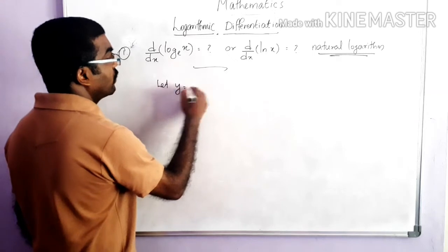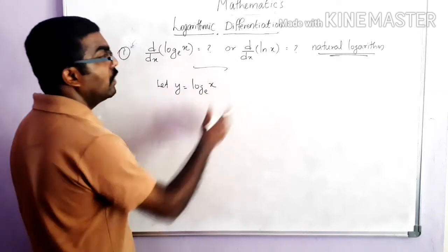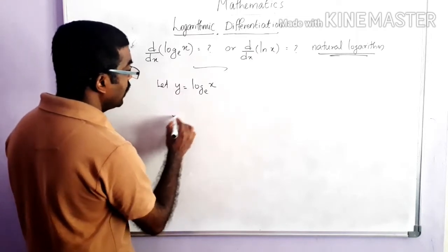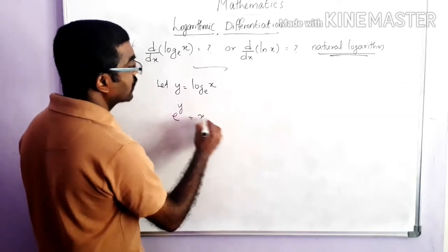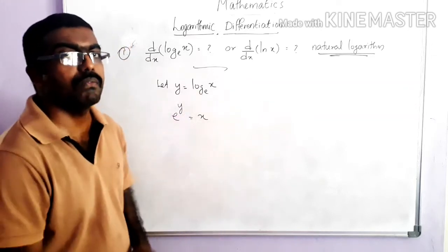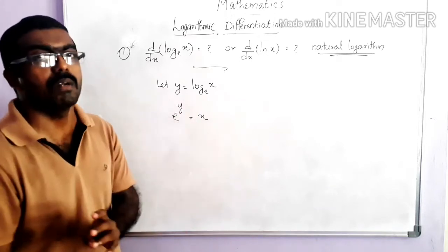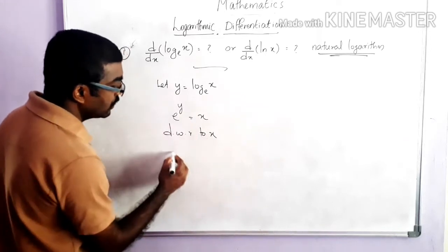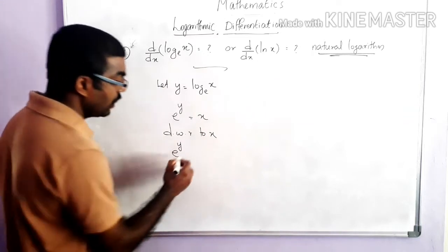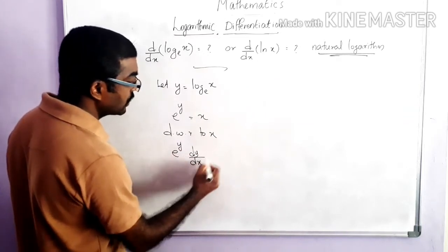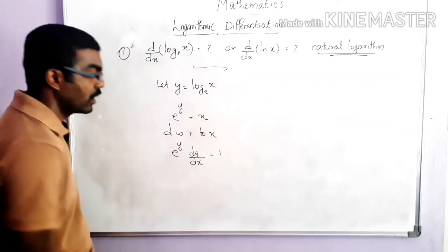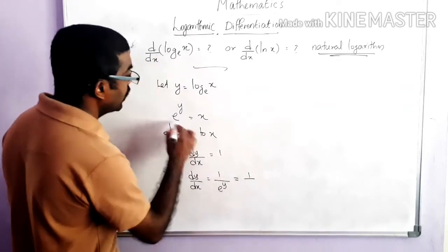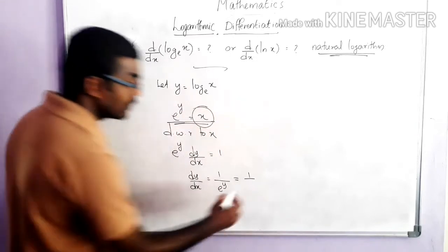Let y equal to log x to the base e, or ln x. In exponential form it can be written as e raised to y equals x. According to the definition of the logarithmic function we can rewrite this as e raised to y equals x. Now we differentiate with respect to x. The derivative of e raised to y is e raised to y times dy/dx, which equals 1. So dy/dx equals 1 divided by e raised to y, and since e raised to y equals x, we get 1/x.